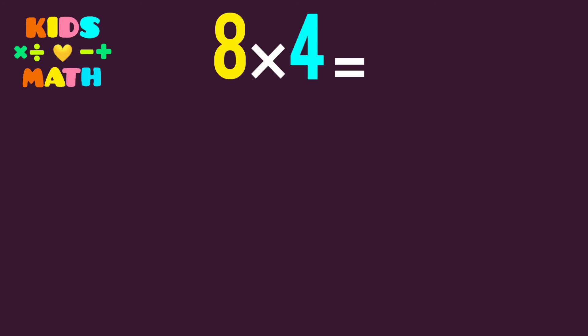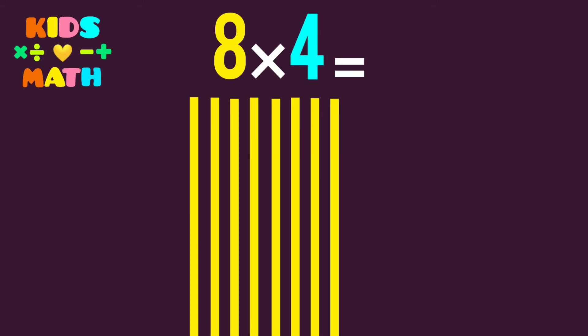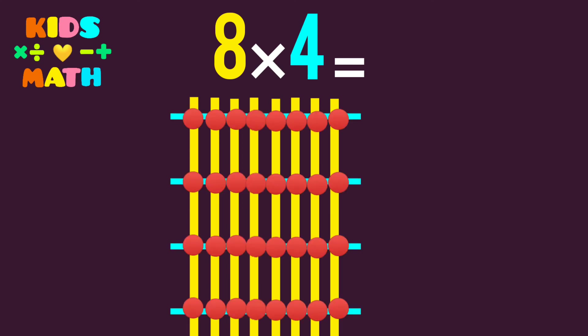8 times 4. The first number is 8, so we derive 8 lines. The second number is 4, so we derive 4 lines. Then we count the common points.